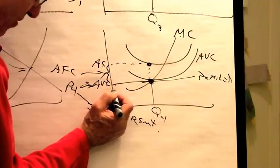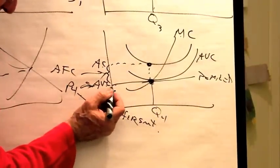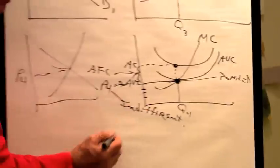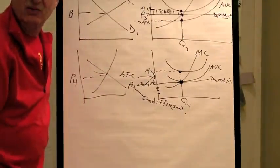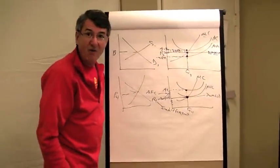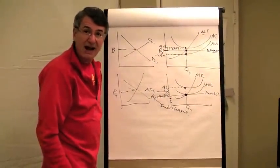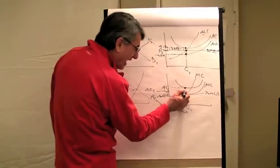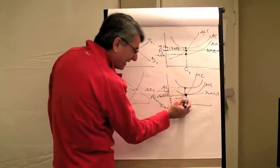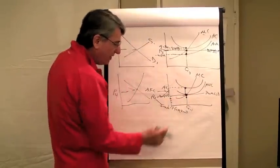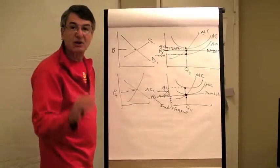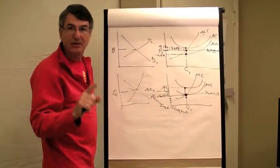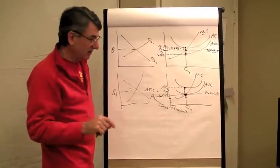At any price below the minimum point of the average variable cost, will the firm produce? No — it will shut down. Because at any price below that, they would not only lose all of their fixed costs, but the price isn't enough to cover their variable costs either. So they would lose more than their fixed costs if they produce. They're better off just to shut down and lose only their fixed costs.